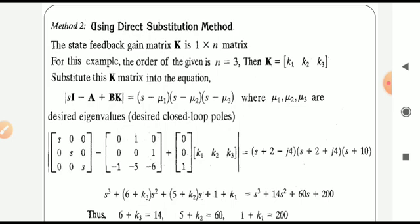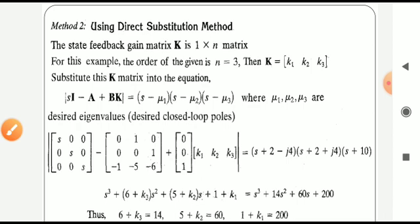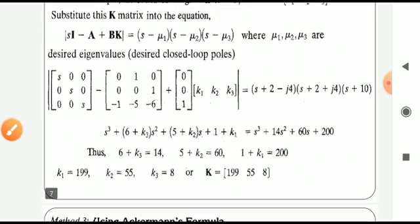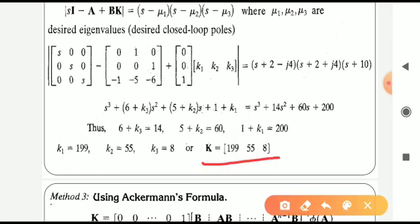For Method 2, the direct substitution method: since n equals 3, the gain matrix K is of order 1 by 3, written as [k1, k2, k3]. For this method we use the equation: determinant of sI minus (A plus BK) equal to (s minus mu-1)(s minus mu-2)(s minus mu-3), where mu-1, mu-2, mu-3 are the desired closed-loop pole locations. Substituting and solving yields K equal to [199, 55, 8], the same result as Method 1.